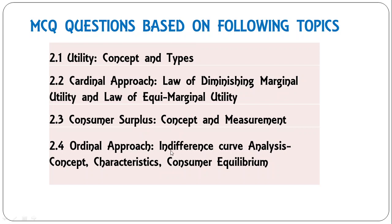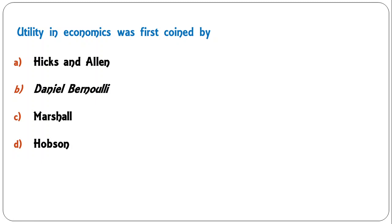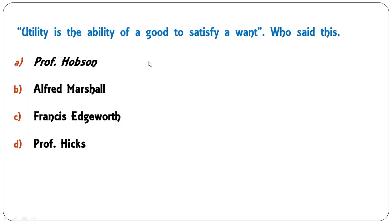Let us begin with the first question. 'Utility in economics was first coined by' — Hicks and Allen, Daniel Bernoulli, Marshall, or Hobson? The correct answer is B: utility in economics was coined by Swiss mathematician Daniel Bernoulli. Next question: 'Utility is the ability of a good to satisfy a want' — who said this? The options are Professor Hobson, Alfred Marshall, Francis Edgeworth, or Professor Hicks.